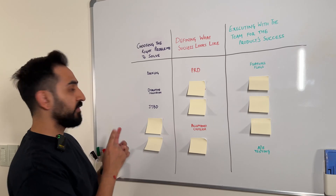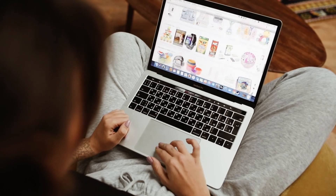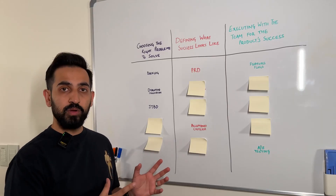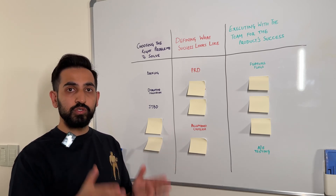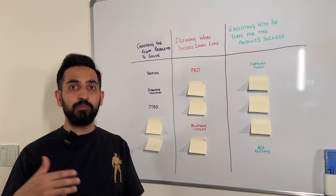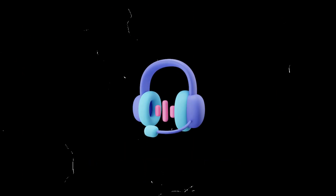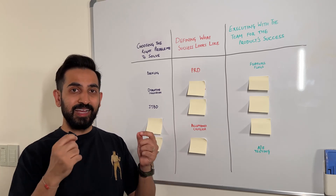JTBD, or jobs to be done, is again a framework by Professor Christensen that talks about what the needs of a customer are when they buy a product. According to this framework, people don't actually buy products — they hire them to solve real needs and problems in their lives. For example, people don't really buy headphones; they hire headphones in order to listen to music that they love. It might sound simple, but it's a profound mindset shift that has deep implications.